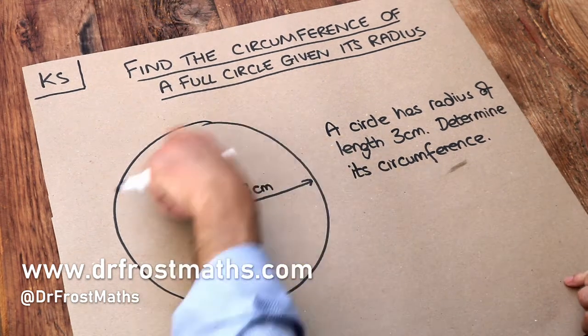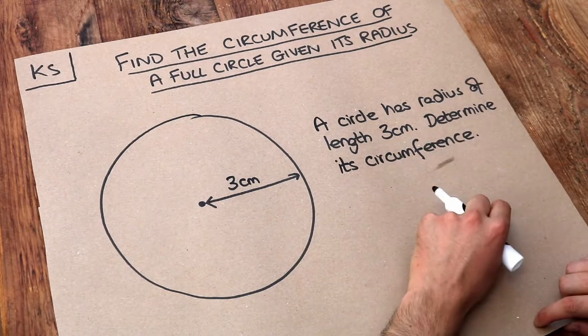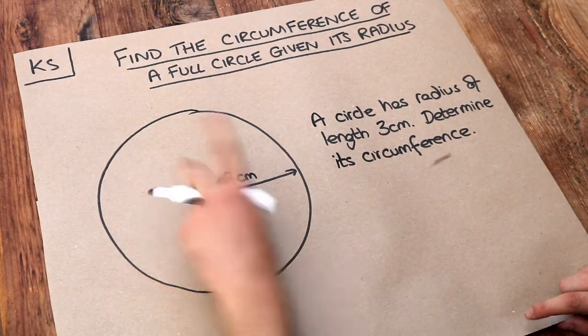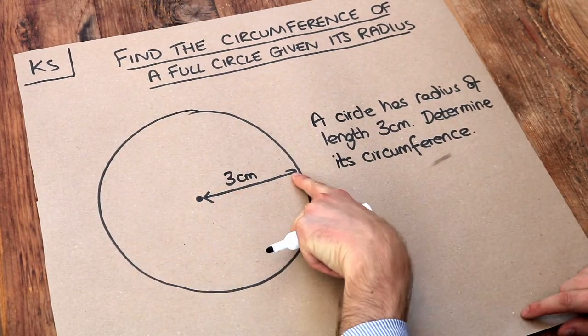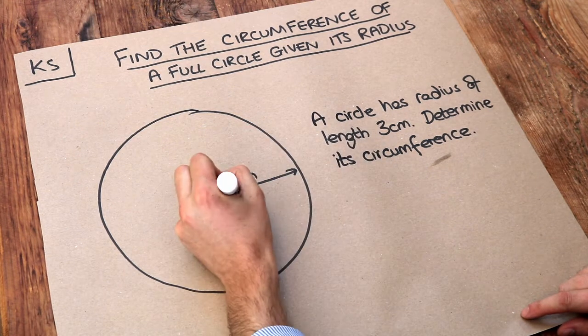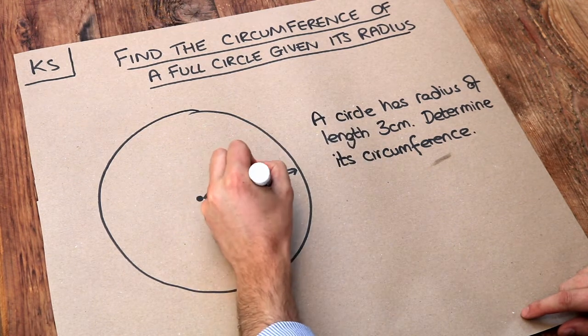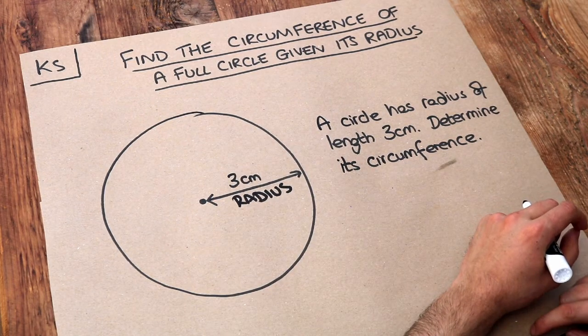Now we've got the circle here and it says the circle has radius of length 3cm. Remember the radius is the line from the center of the circle to the circumference of the circle. So that's the radius and you want to determine the circumference of the circle.